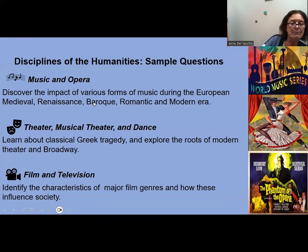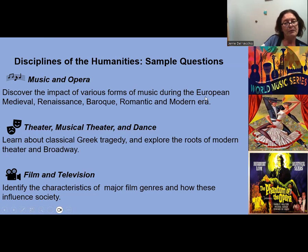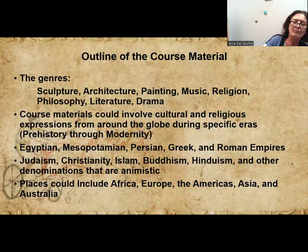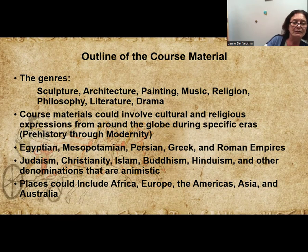We also discover the impact of various forms of music during the European medieval, Renaissance, Baroque, Romantic, and modern eras, and how they either copy each other or become very different — with ideas often allowing singers, songwriters, and theater to move things a step forward. Classical Greek tragedy explores the roots of modern theater and Broadway. And in film and television, we identify the characteristics of major film genres and how these influence society.